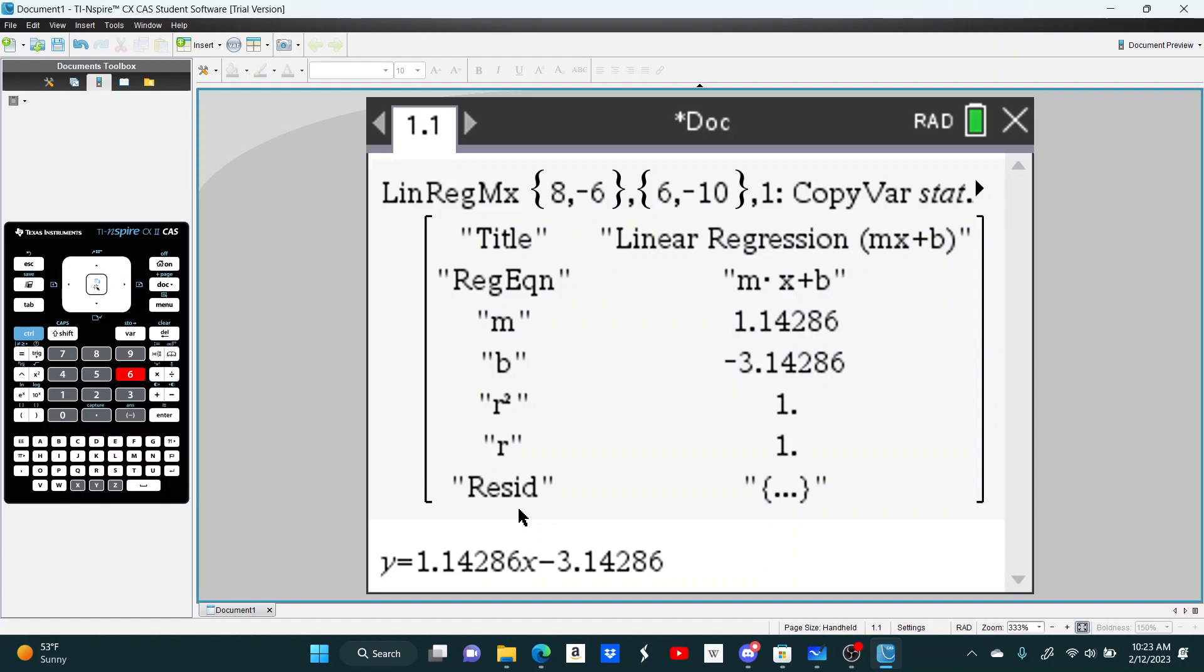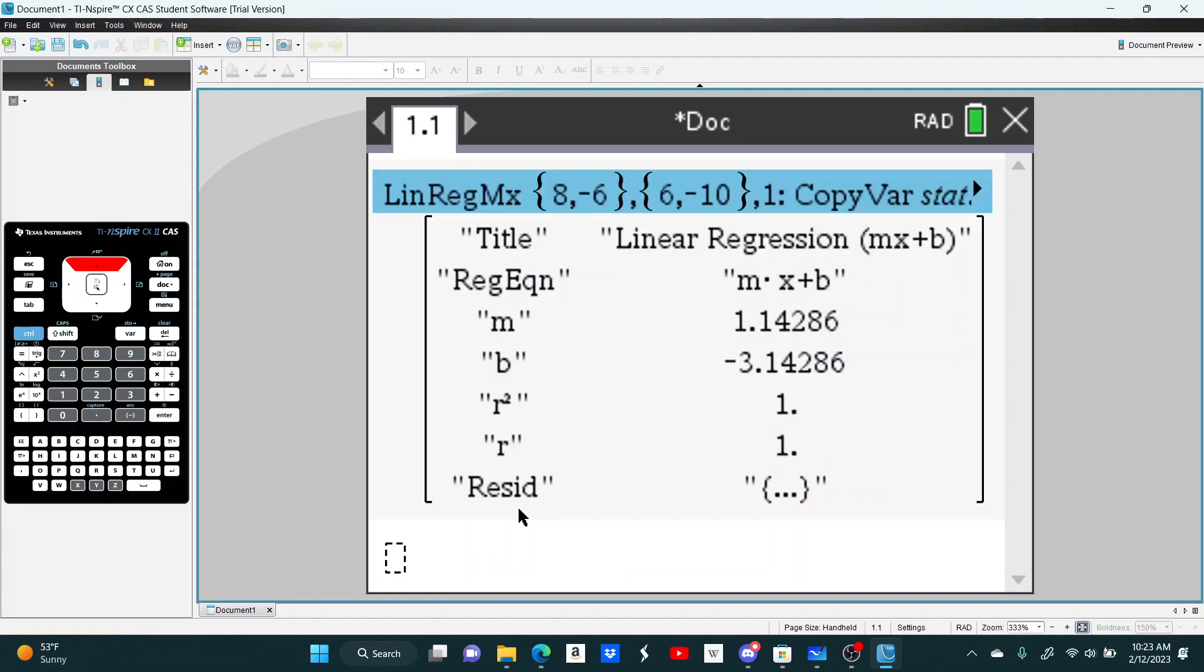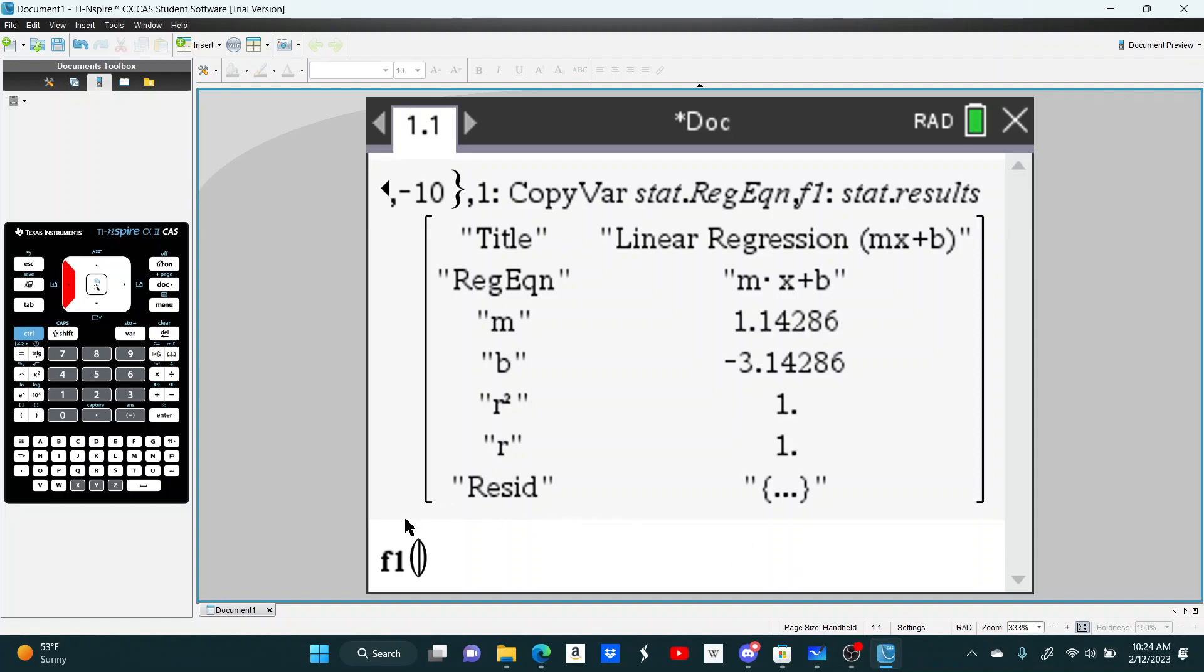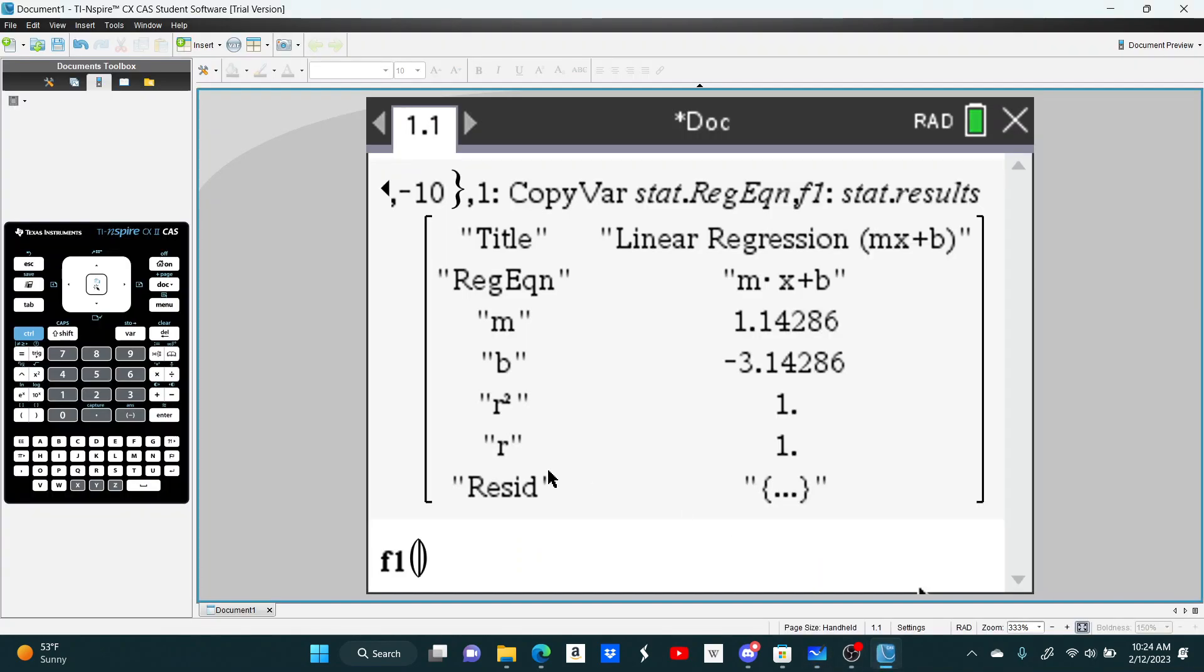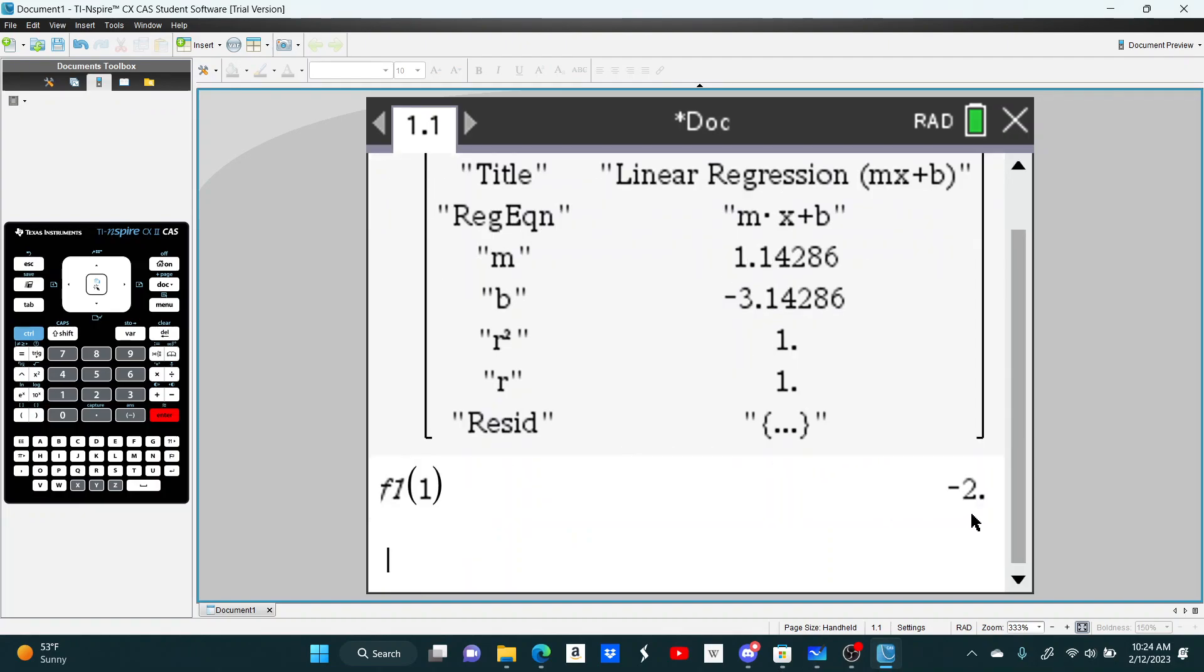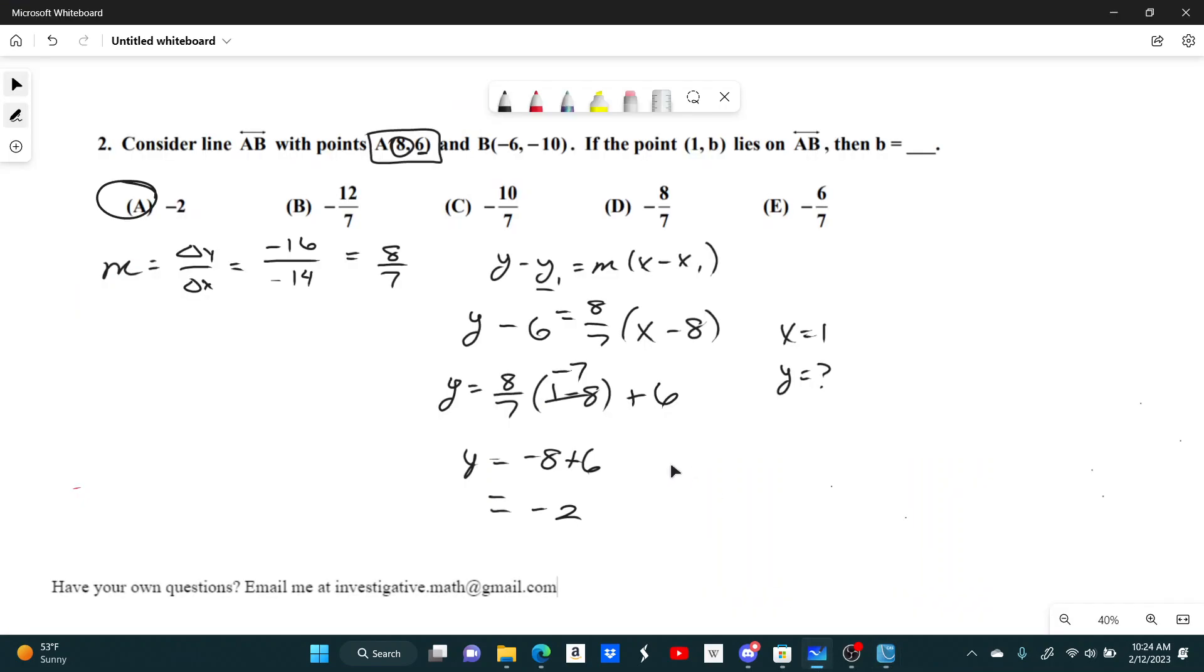But the good thing about using the regression is that because I stored it in F1, now that's stored as a variable. So now I can say, in my question, I'm plugging in 1 for x, right? I'm plugging in 1 for x. So I can just say, F1 of 1, click Enter, that outputs negative 2. And you get the same answer.